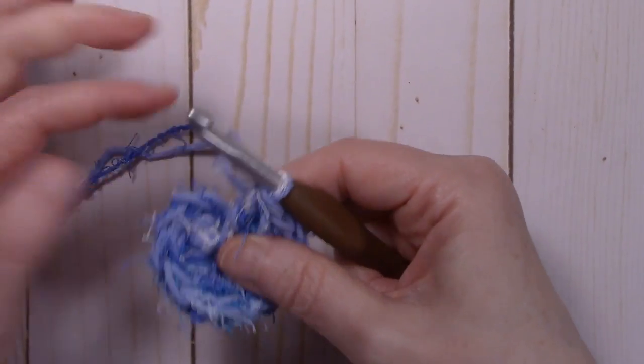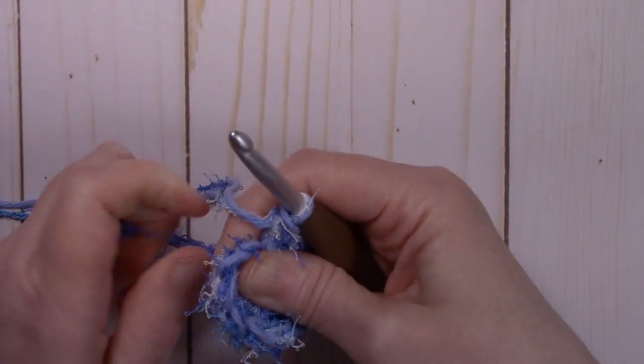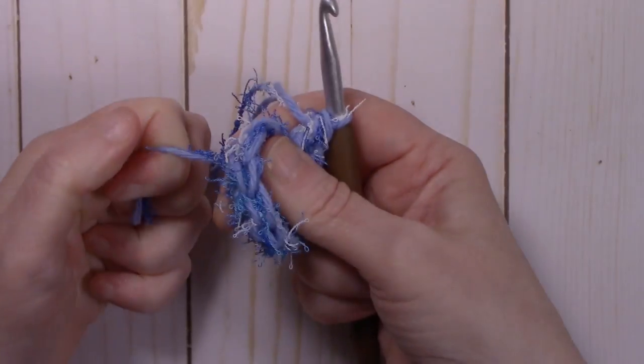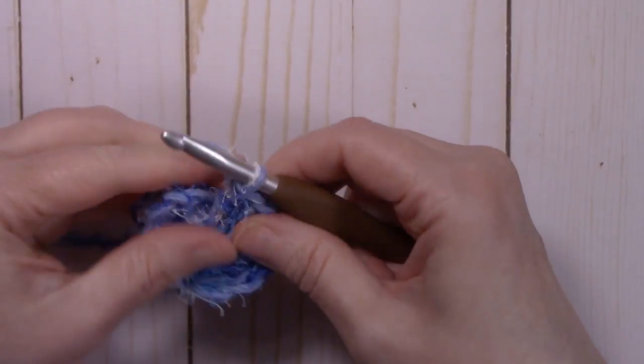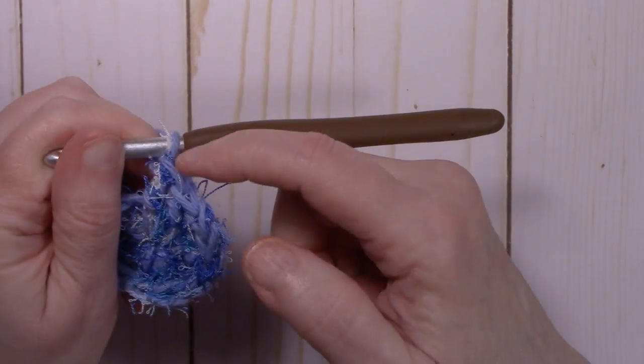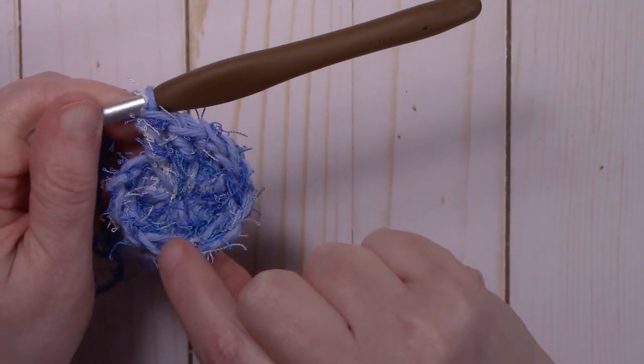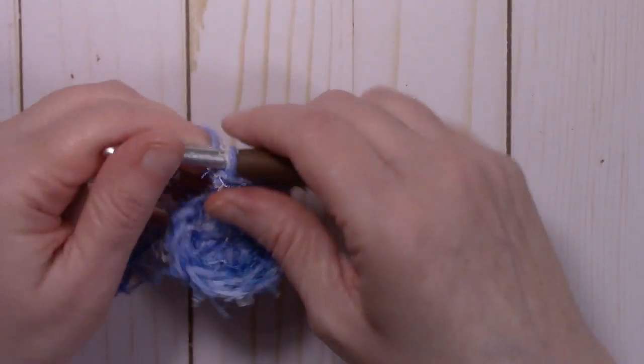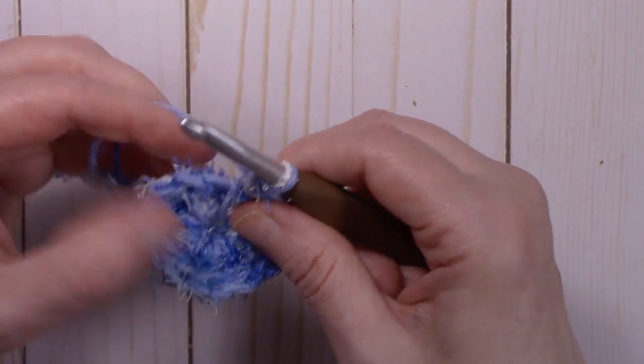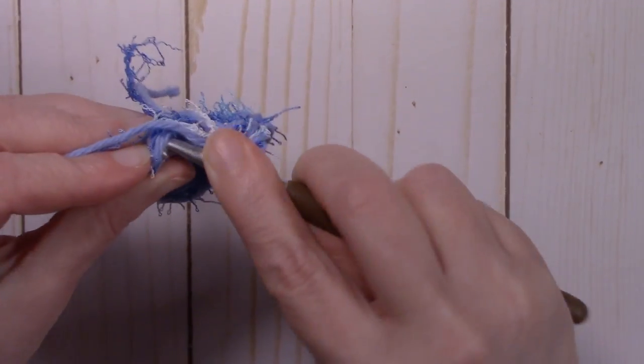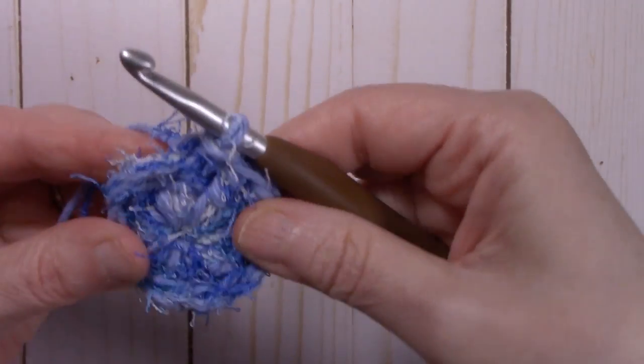Okay, now since our first chain three counts as a stitch, that should be twelve stitches now. We're going to take that tail and just pull it to close the center hole a little bit. And then go ahead and count back. One, two, three, four, five, six, seven, eight, nine, ten, eleven, and twelve. And that is where the top of our chain is, and we're going to go ahead and slip stitch right into that.